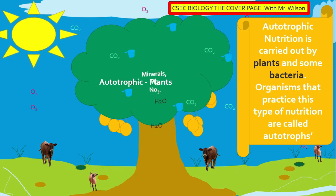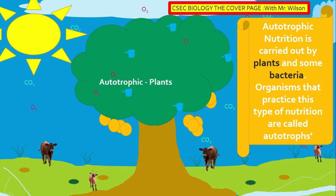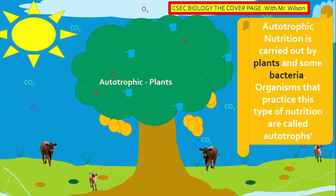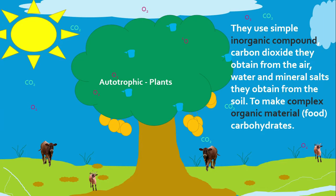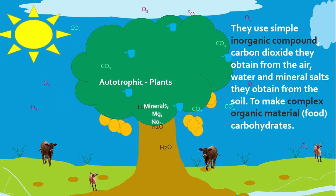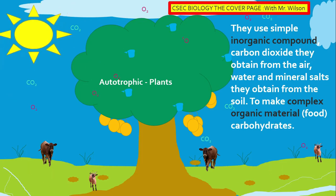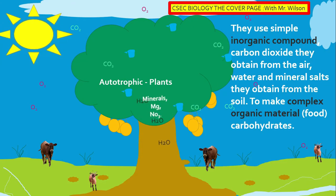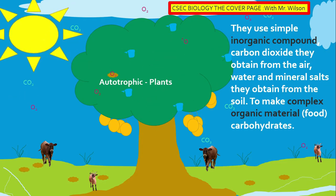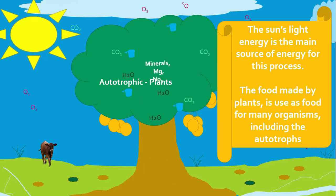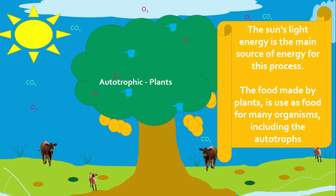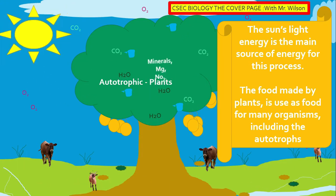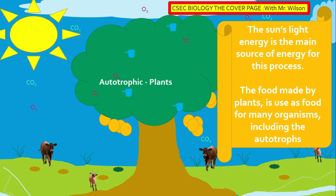If we look at the plant carefully, we would observe that there's carbon dioxide entering the plant and, of course, oxygen being given off. This is a good example of diffusion. Autotrophs use simple inorganic compounds like carbon dioxide obtained from the air, water, and mineral salts obtained from the soil to make organic food material — for example, carbohydrates, protein, and lipids. The sun's light energy is the main source of energy for this process, and the food made by plants is used as food for many organisms, including the autotrophs themselves.